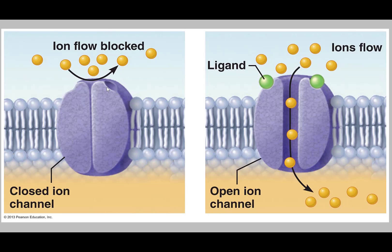Here is one of those chemically-gated or ligand-gated channels. On the left we see it is closed — whatever ion could pass through cannot get through because the gate is closed. The ligand, probably acetylcholine as we'll see in our next lecture, when it binds, causes the gate to open. Now ions can flow through from the area of high concentration toward the area of low concentration.